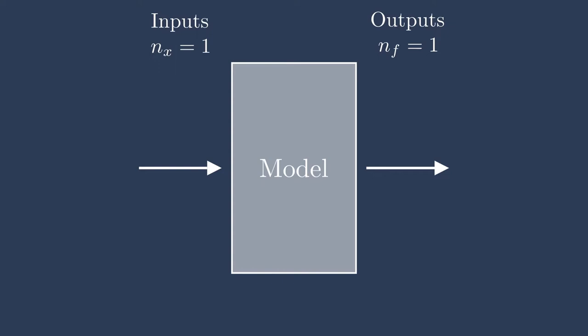However, there are also many models in engineering where the inputs may be something else. They may be higher dimensional than just a scalar. Here I'm showing you where the number of inputs n_x equals 6. We have maybe 6 arrows, 6 inputs coming into this model, and we have 1 output again.